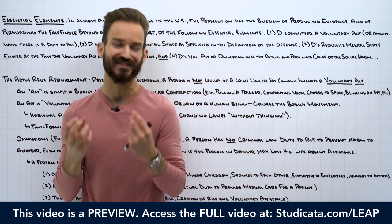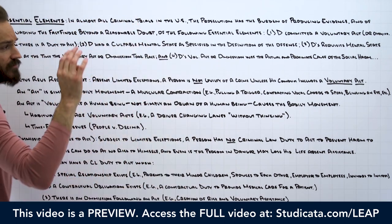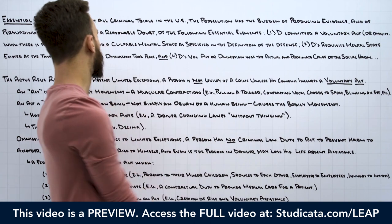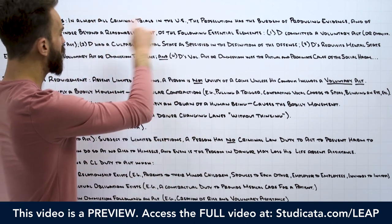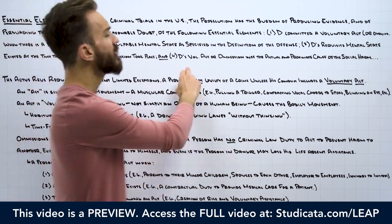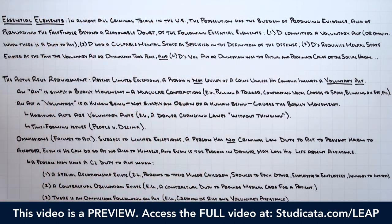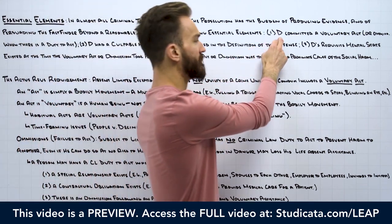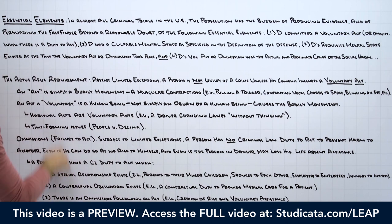These are why we call them the essential elements. The easy way to remember this: we have four essential elements — the actus reus requirement, the mens rea requirement, the concurrence requirement, and the causation requirement. In other words, the prosecution is going to have the burden of establishing that the defendant committed a voluntary act, or omission when there is a duty to act.